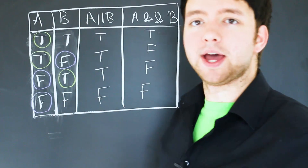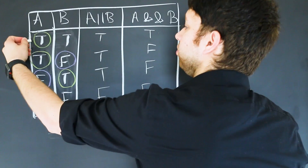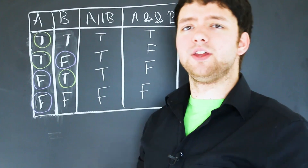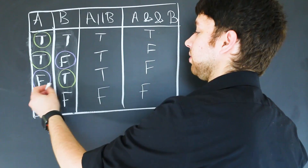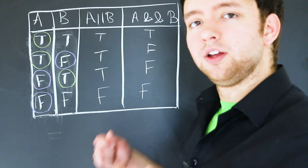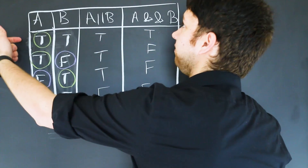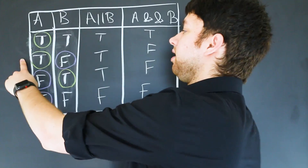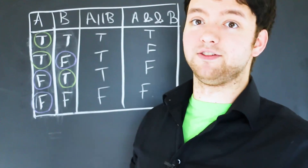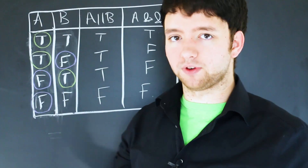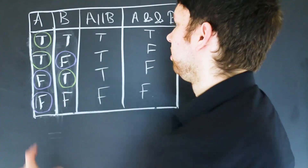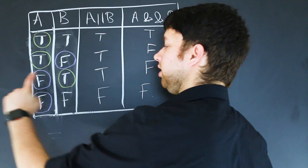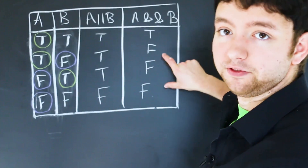Reading left to right: if you see a true on the left and you are working with OR, you automatically know the end result is true — that is the short-circuit. For the false case on the left with OR, you cannot know for sure because the next one might be true, so you have to evaluate both. For AND, any time you see a false on the left, you know the end result is false. The true-on-the-left case for AND does not give enough information, so that one cannot short-circuit.